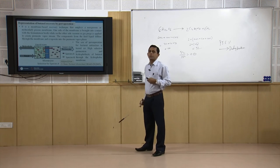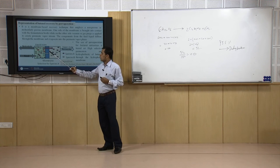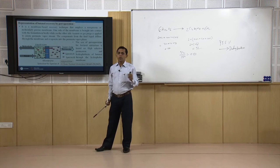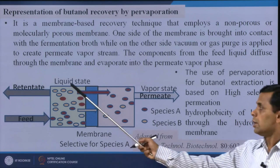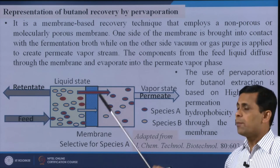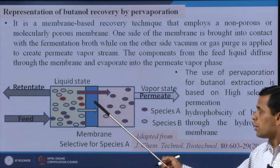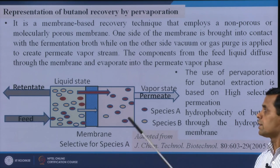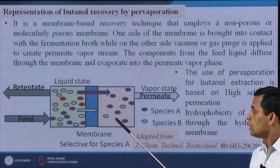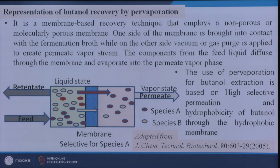In the pervaporation process, a selective hydrophobic membrane is used. The fermenter broth is fed on one side; because the membrane is selective to hydrophobic butanol, butanol passes through the membrane into the other chamber, which is under vacuum. The product coming through the membrane is in vapor phase, and butanol is collected from this vapor. This is the mechanism for separating butanol using pervaporation.